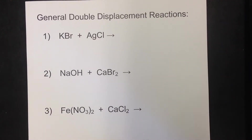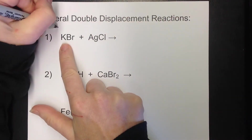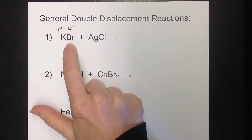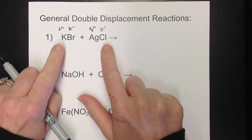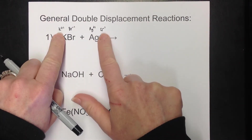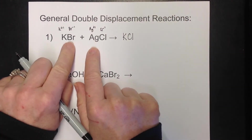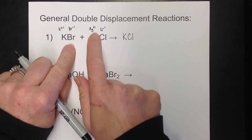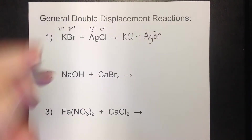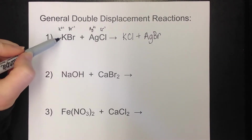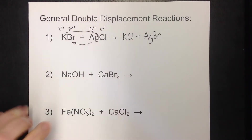Let's do some double displacement reactions. It's easiest for beginning students to write your ions out. For example, potassium is +1 and bromide is -1; silver is +1 and chloride is -1. If the two outer ones meet, that's K⁺¹ with Cl⁻¹ — the ones cancel, giving KCl. Then we put silver with bromide: silver is +1, bromide is -1, giving AgBr. So the products are potassium chloride and silver bromide.